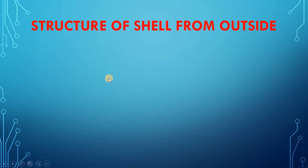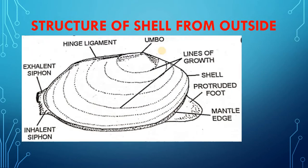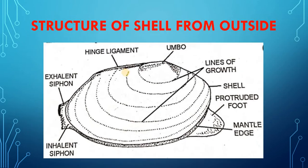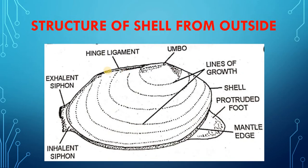Structure of shell from outside. This picture shows the shell of Unio from outside. The shell is brown or mud-colored and shows important features which are as follows.